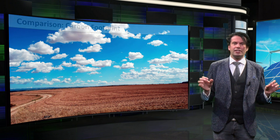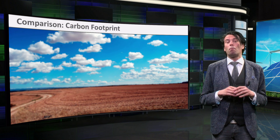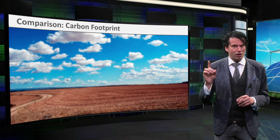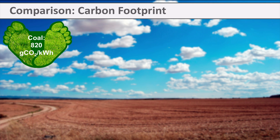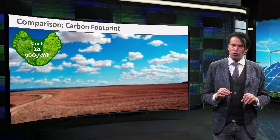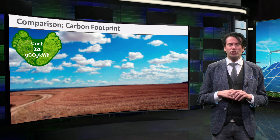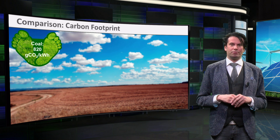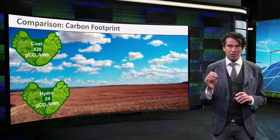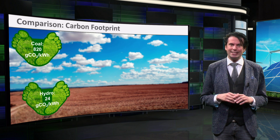Of course, there are other criteria than power output density and available power potential for comparing renewable technologies. The impact on the environment and the cost per unit power are also very important factors. A popular way of expressing the environmental impact is with the carbon footprint, which indicates the amount of carbon released per unit energy over the system's lifetime. For perspective, the carbon footprint of coal-fired power plants is 820 grams CO2 per kilowatt hour. On average, the carbon footprint of hydroelectricity is typically 24 grams CO2 per kilowatt hour, according to the IPCC research from 2014.